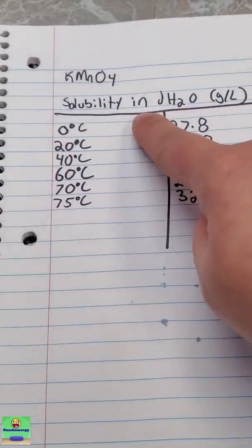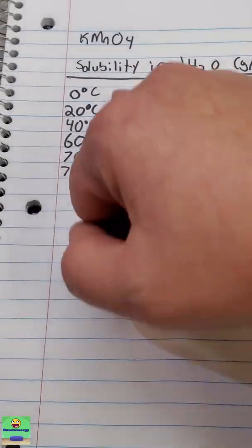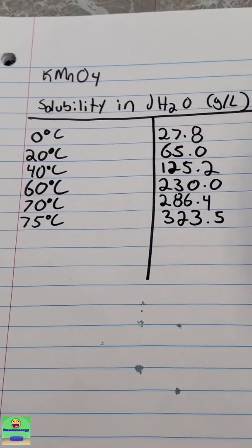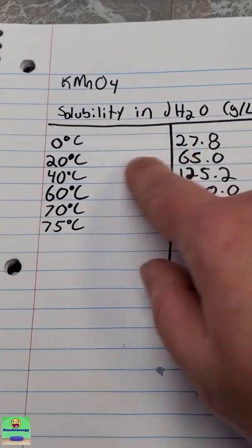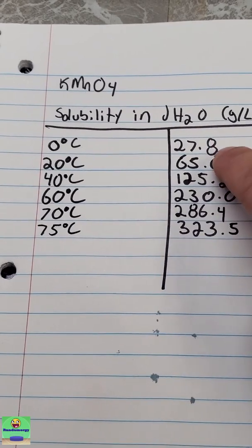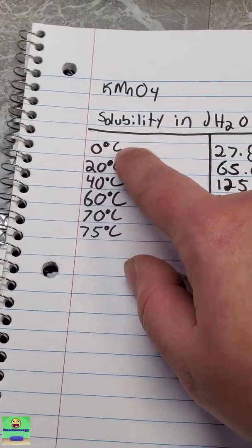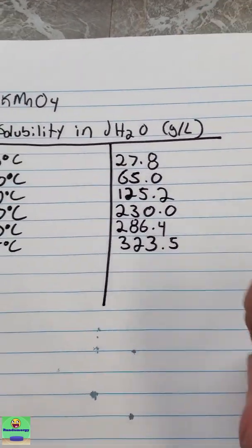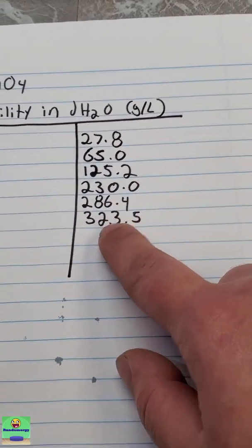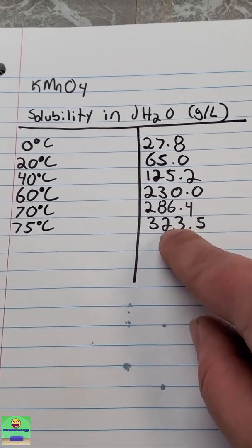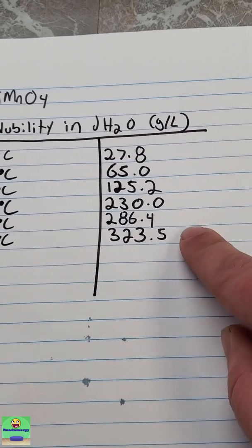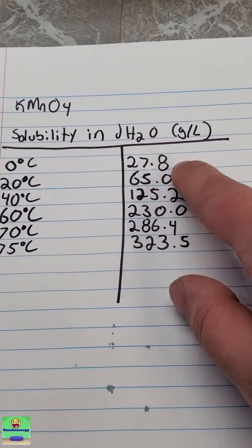I looked up some charts on Google and I found this little quick reference guide to tell you approximately how much potassium permanganate you can dissolve in a known amount of distilled water at certain temperatures. So this is going to be in grams per liter as far as the potassium permanganate amount. And as you can see at zero degrees Celsius, it's very low solubility, 27.8 grams per liter. But even if you just heat it up, the water up to 75 degrees Celsius, it's over 10 times, the potassium permanganate is over 10 times more soluble in the water at this higher temperature. That's not even the boiling point of water. 323.5 grams per liter as compared to 27.8 grams per liter.